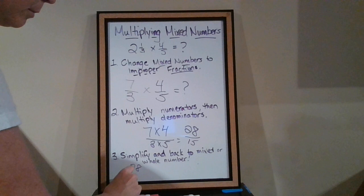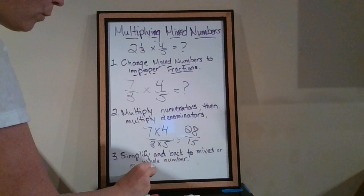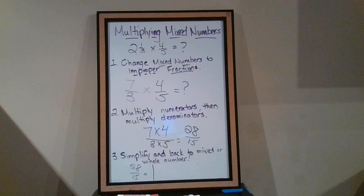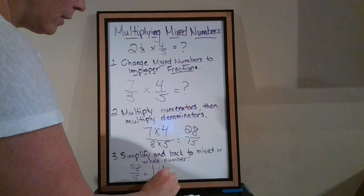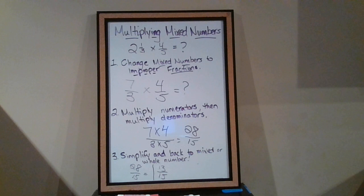So I have to think about how many times 15 goes into 28 without going over it. It only goes in once, because if it went in twice, that would be 30. So 15 goes into 28 one time, that's our whole number. And the remainder, the difference between 15 and 28 is 13. So 13 is our numerator, 15 remains our denominator. So our final answer for this question, 2 and 1 third times 4 fifths ends up being 1 and 13 over 15.